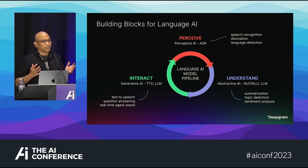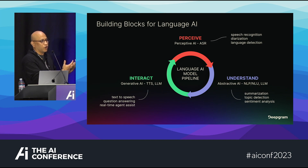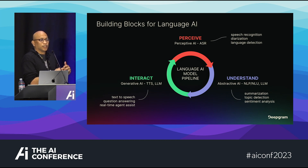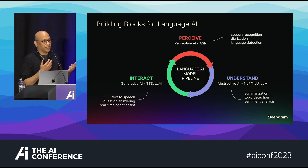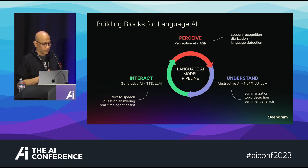When you think about language as a whole journey, we think of it as a loop. The loop starts with perception — taking audio and converting it into text. Once you have text, you can do a lot: summarization, diarization (which labels who spoke what words), topic detection, emotion analysis, and so on.